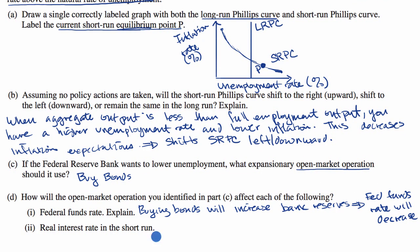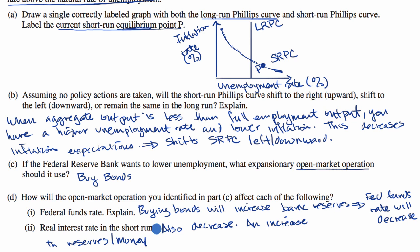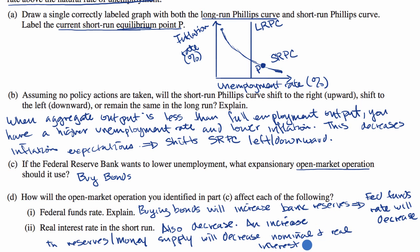Real interest rates in the short run will also decrease. An increase in reserves and money supply will decrease nominal and real interest rates in the short run. There is a situation where runaway inflation might cause nominal rates to fall without affecting real rates as much, but in the short run we can confidently say that if nominal interest rates are going down, real interest rates will go down as well.